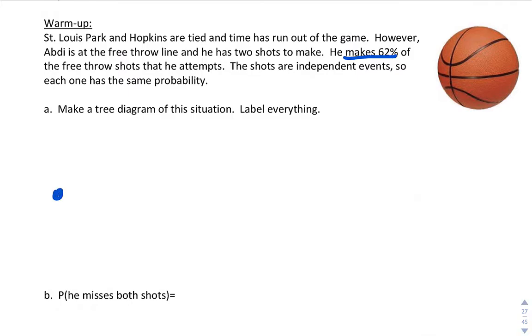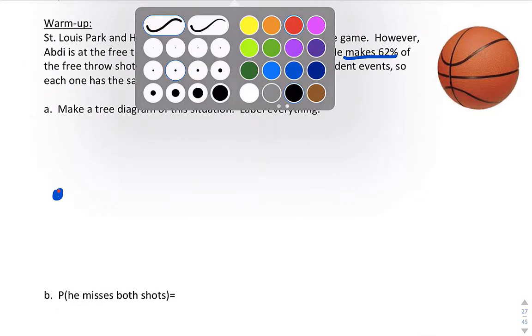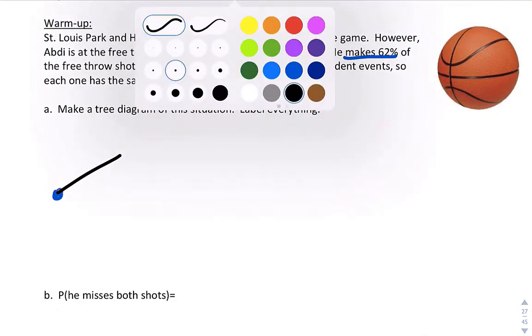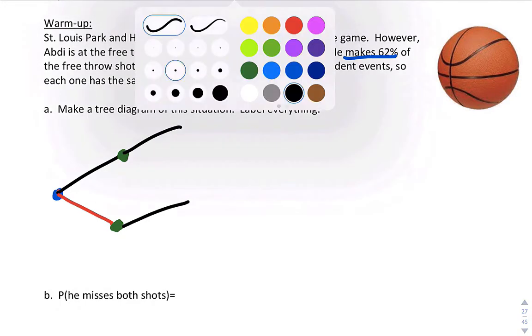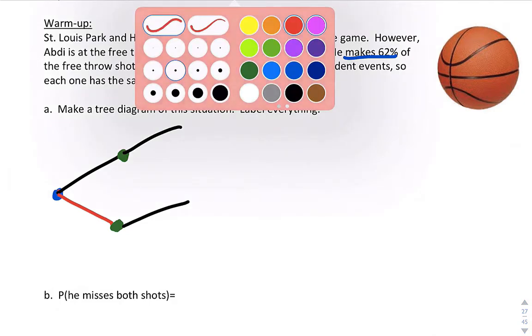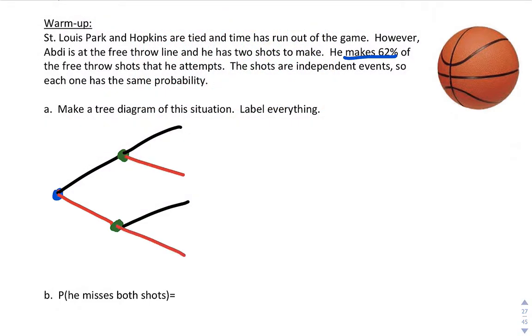Alright, so here's his first shot. Two things can happen. He can make the shot. We'll do black if he makes the shot. He can miss the shot. We'll do red if he misses. Then he gets a second shot no matter what. Here, green will be our second shot here. And again, he can either make the shot or he can miss the shot.